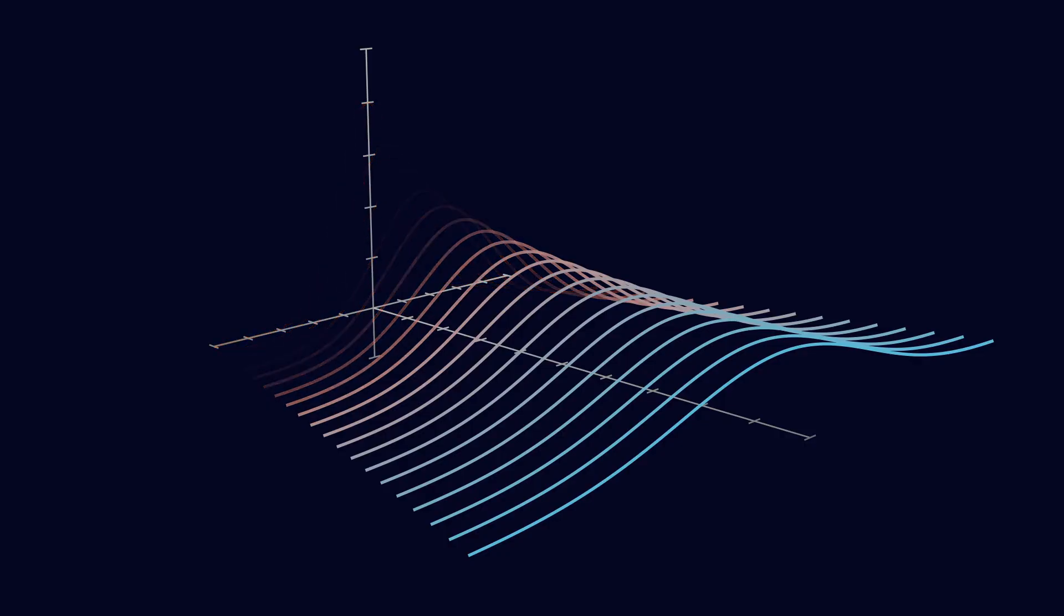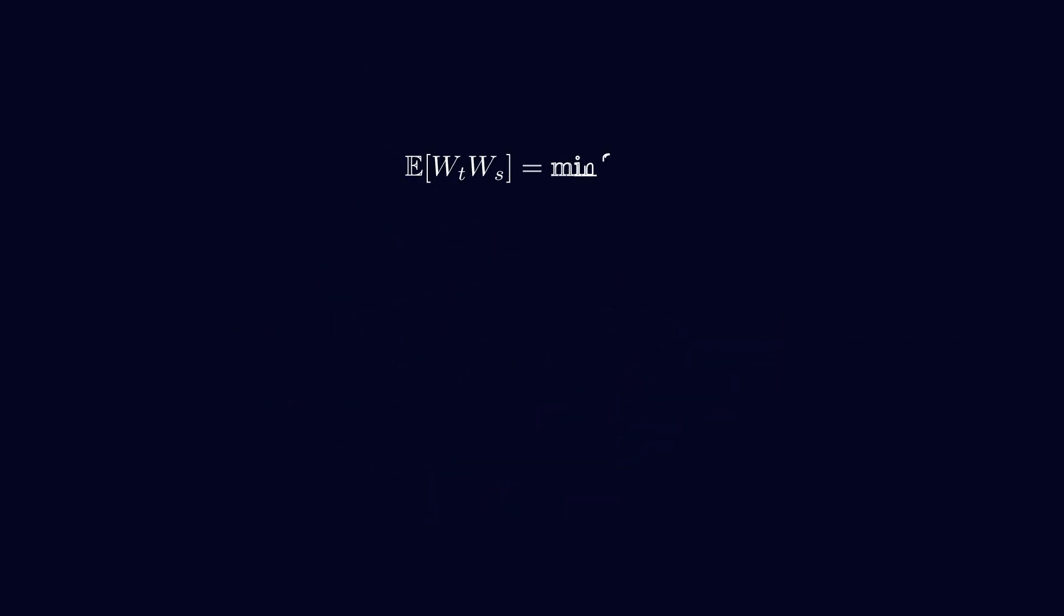Alright, so next, let's talk about a couple of key properties of Brownian motion. One interesting property is that the expected value of Wt times Ws is equal to the minimum of t and s. To prove it, we can add to the equation those two terms that cancel each other. Then, we use the property of independent increments to separate the expectations. Based on this property, we can also see that the expected value of the square of Wt is equal to t. And the same goes for the variance. So everything fits nicely with the definition of Brownian motion that we talked about earlier.